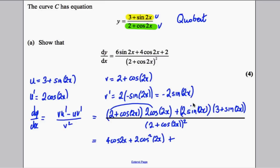OK, and then we multiply this. This multiplied by this would give me 6 sine of 2x. And this multiplied by this would give me 2 sine squared of 2x.